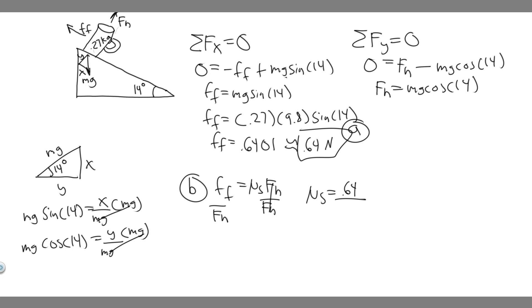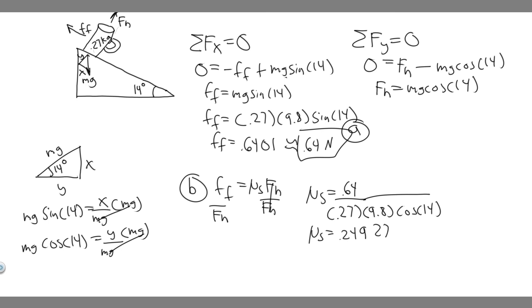Now we plug in: μs = 0.64 / (mg·cos14°) = 0.64 / (0.27 × 9.8 × cos14°) ≈ 0.249, which rounds to 0.25. Keep in mind the coefficient of static friction is unitless — there are no units for static or kinetic friction coefficients. So 0.25 is your answer to part B, and 0.64 N was the answer to part A.